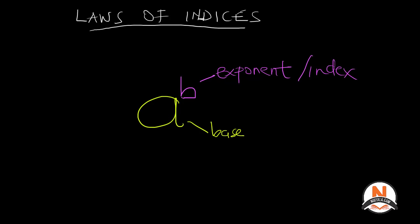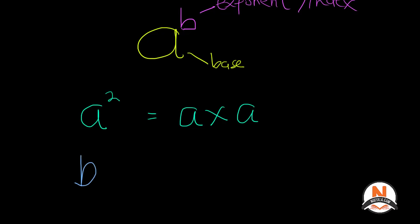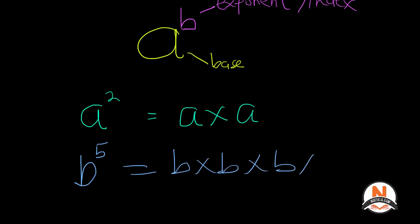Let me use numbers to make this easier to understand. If we have a squared, that means we are multiplying a by itself two times: a times a. If we have b to the fifth power, this means we're multiplying b by itself five times: b times b times b times b times b. That is what the exponent means.